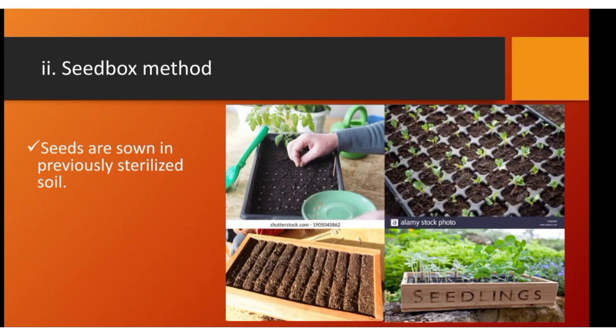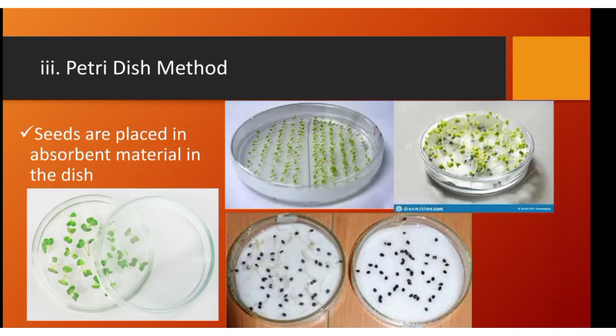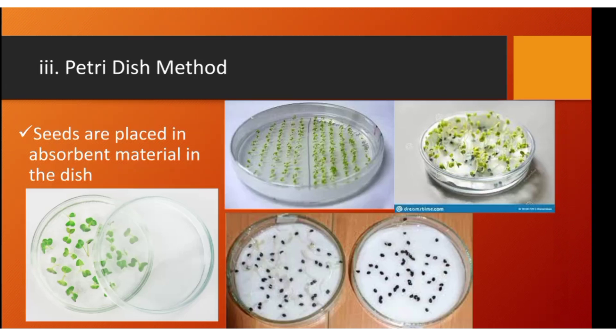Second, we have the seed box method. You can see in the picture a seedling tray and seed box in which seeds are properly lined and sown together in sterilized soil. You should already know the process of sterilizing soil to avoid seed-borne diseases caused by pathogens and microorganisms that live in the soil, to avoid contamination and damping off of seeds and seedlings.